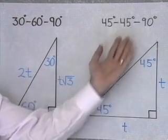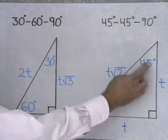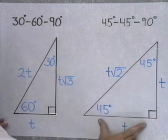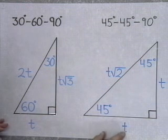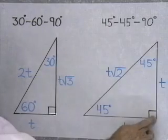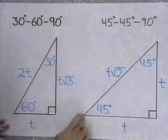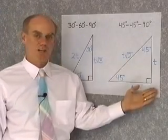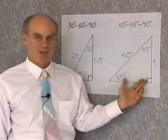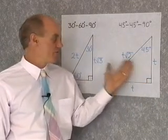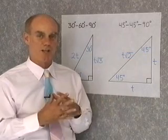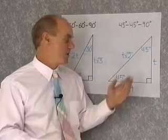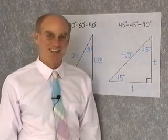In a 45-45-90 right triangle, the two acute angles are each 45 degrees. Whenever that's the case, both legs have equal length t, and the hypotenuse is always t times √2. You want to memorize the relationship between the sides of these two special triangles, as we'll use them throughout the course.